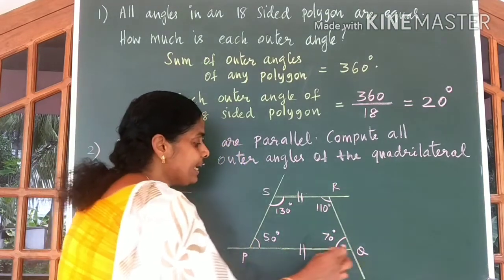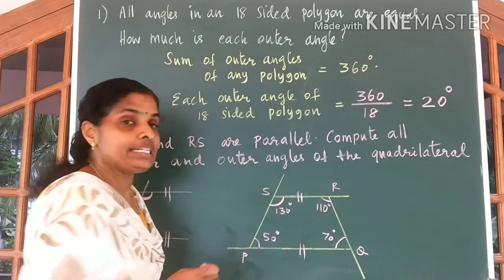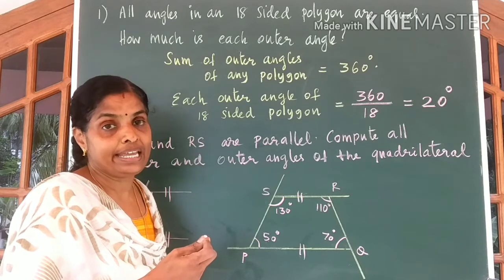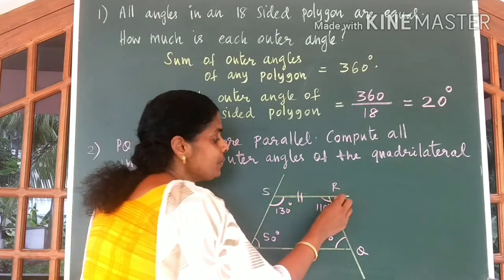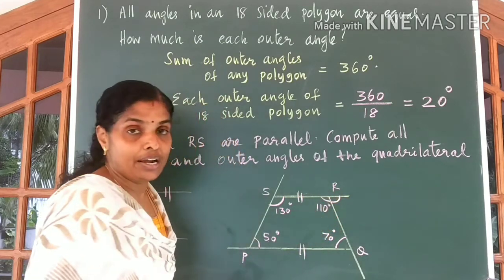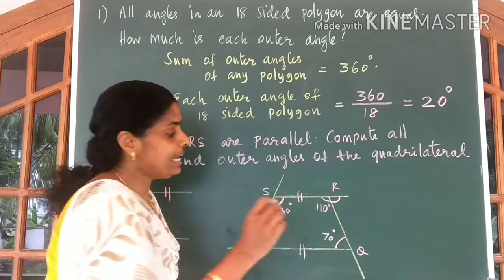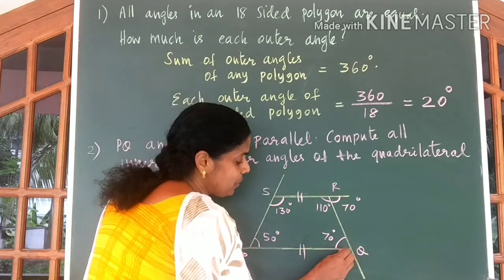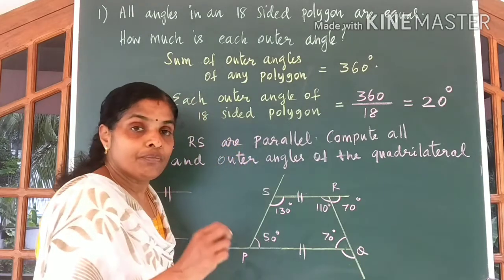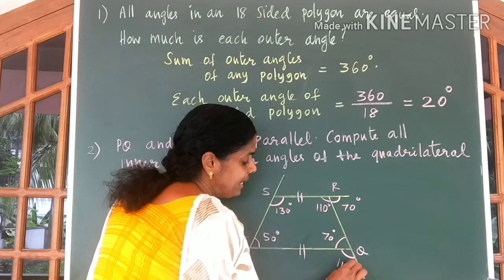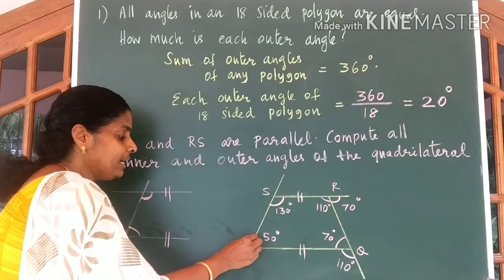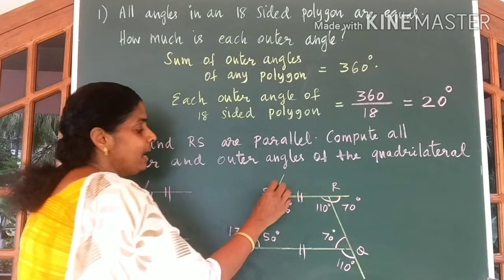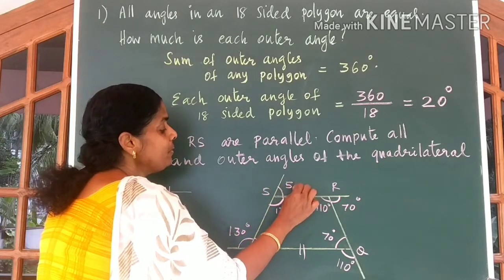Now we have all the inner angles of quadrilateral PQRS. To write the outer angles we use the idea of linear pair. Outer angle at R = 180 − 110 = 70 degrees. Outer angle at Q = 180 − 70 = 110 degrees. Outer angle at P = 130 degrees. Outer angle at S = 50 degrees.